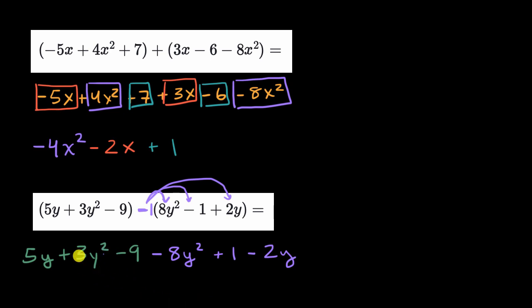And now I can do what I just did in the previous example. I could, for example, say, all right, where are my second degree terms? I have three y squareds, and I'm going to subtract eight y squareds from that. Well, that's going to be, let me scroll down a little bit. That's going to be negative five y squareds.